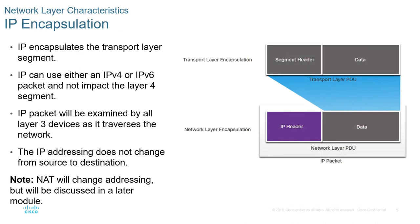Let's talk about encapsulation. A segment from layer 4, the transport layer, will become the data for our packet. Our packet will then have the IP header added. Keep in mind, if we're doing any type of address translation — NAT — the destination and source addressing may be slightly different, but the IP header is where source and destination address information will go.